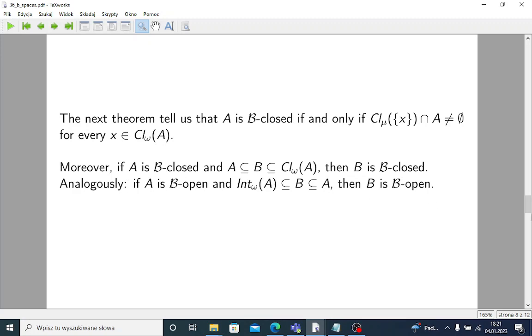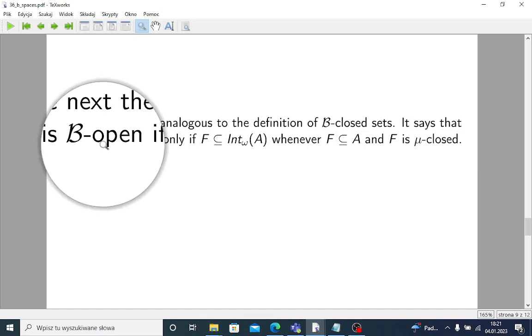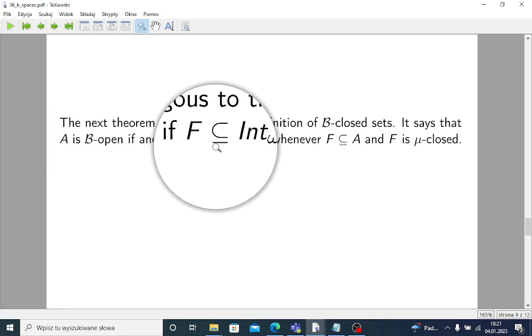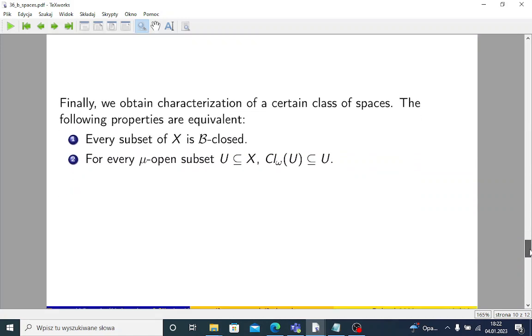The next theorem is analogous to the definition of B-closed. It says that A is now not B-closed, but B-open if and only if F is contained in omega interior of A, wherever F is μ-closed and contained in A. So, if we have some μ-closed set which is contained in our A, then if our A is B-open, it means, it's equivalent to say that F must be contained in omega interior of A.